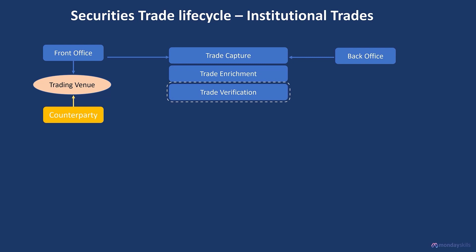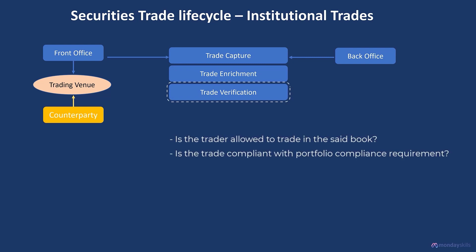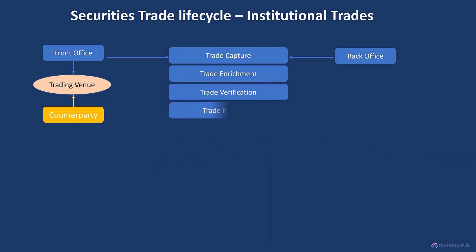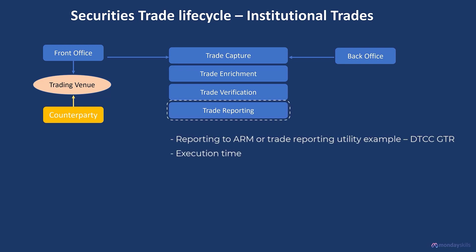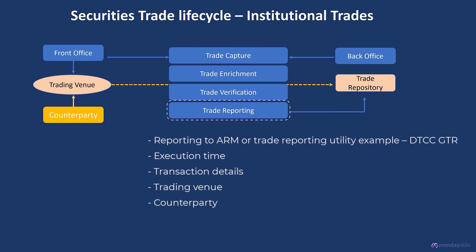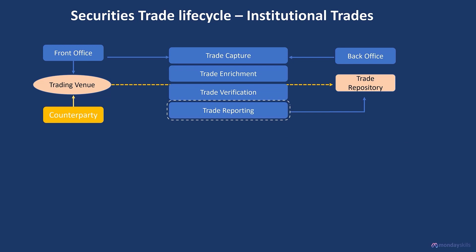Once the trade data has been enriched, the system will perform validation checks for the trade to ensure transaction data is in order. In most jurisdictions, securities regulators require securities trading firms and trading venues to send the trade details to a central trade repository or an authorized reporting mechanism (ARM), managed by the regulator. The trade information captured is sent to the trade repository in the format specified by the trade repository. The deadline for reporting the trade may differ based on asset class, instrument type, and jurisdiction.